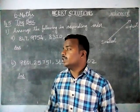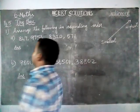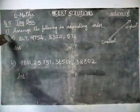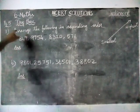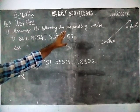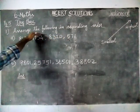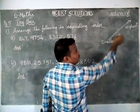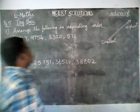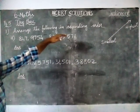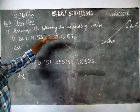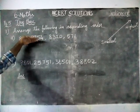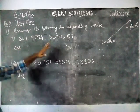Now we are going to see 600 maps, page number 5, try this. First, arrange the following in ascending order. The meaning of ascending order is from smallest value to highest value. So, here they have given 4 numbers — in these 4, which is the smallest number and which is the highest number we have to identify, then we can write it in order.